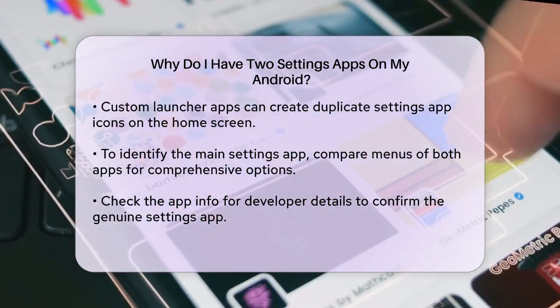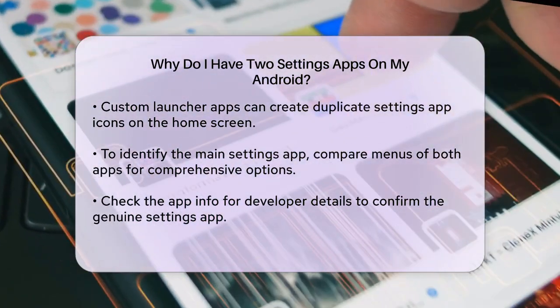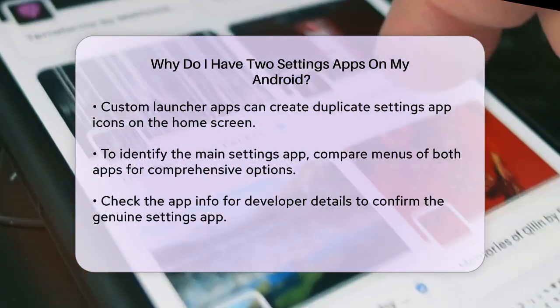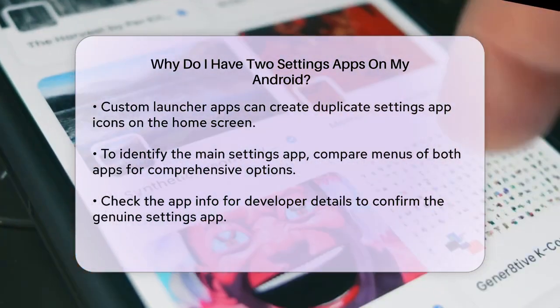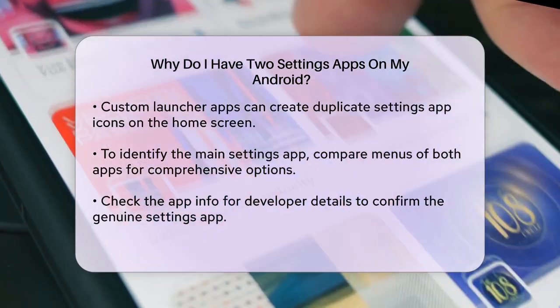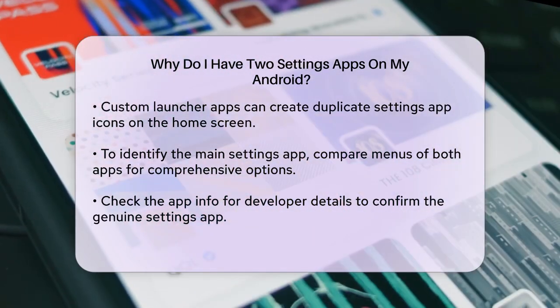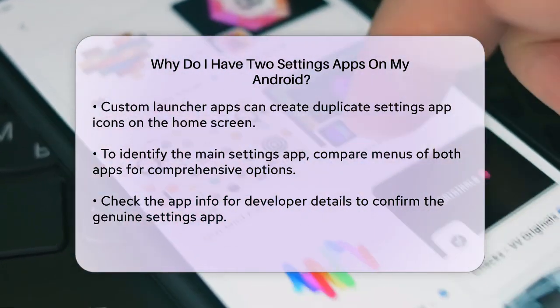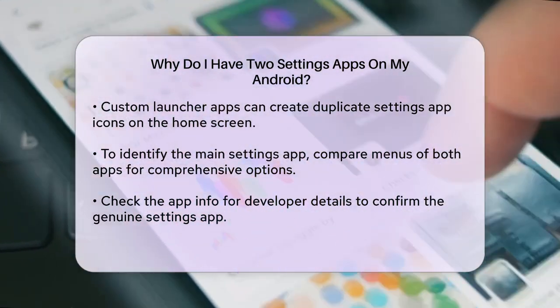You can also long press on each app icon, tap App Info, and check the developer and permissions. The real settings app will be developed by the manufacturer of your operating system.